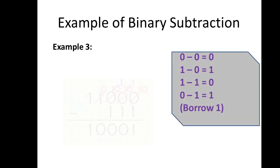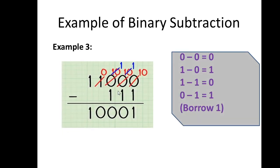Example 3: subtract 1111 from 11000. When subtracting 1 from 0, it becomes 10 in binary, so 2 minus 1 equals 1. Then 1 minus 1 equals 0, then 1 minus 1 equals 0, then 0 stays as 0, and 1 stays as 1. The final answer is 01001.